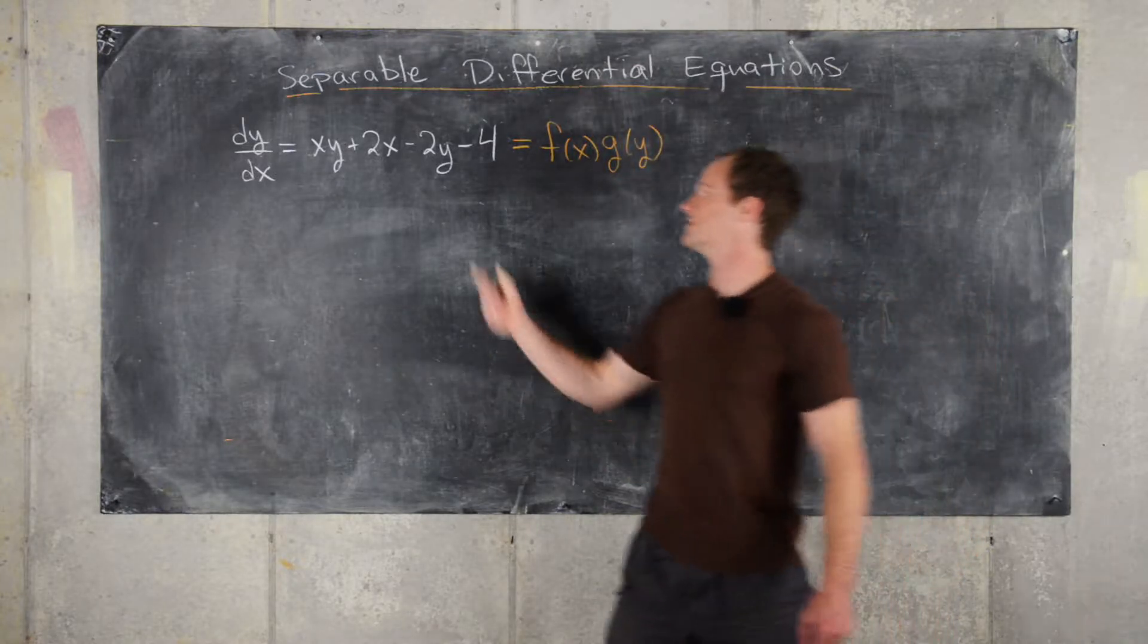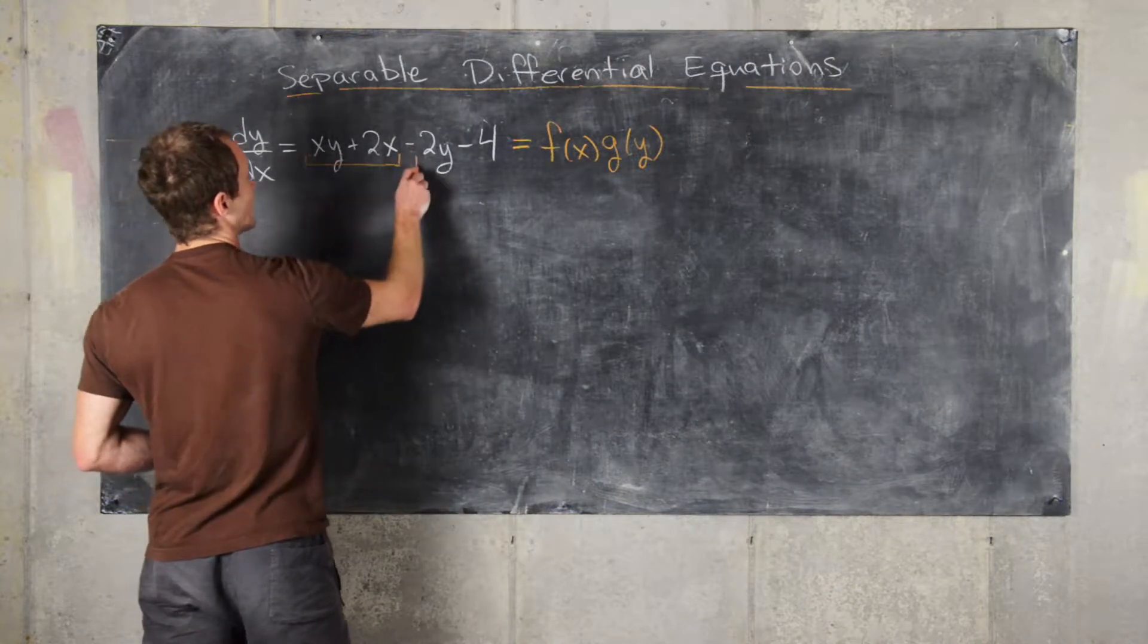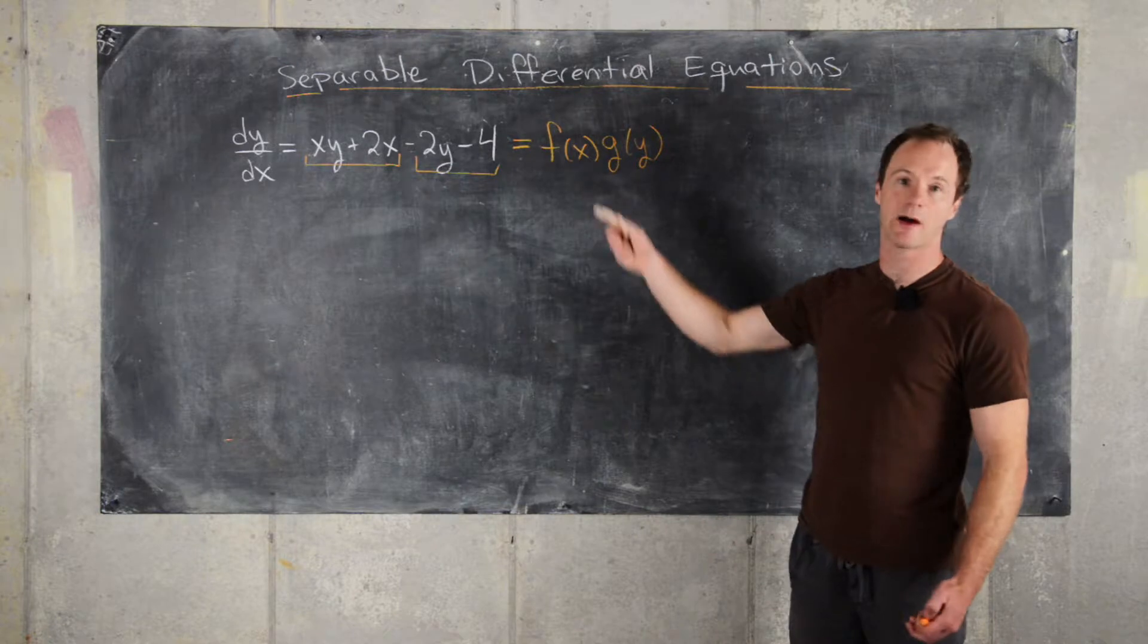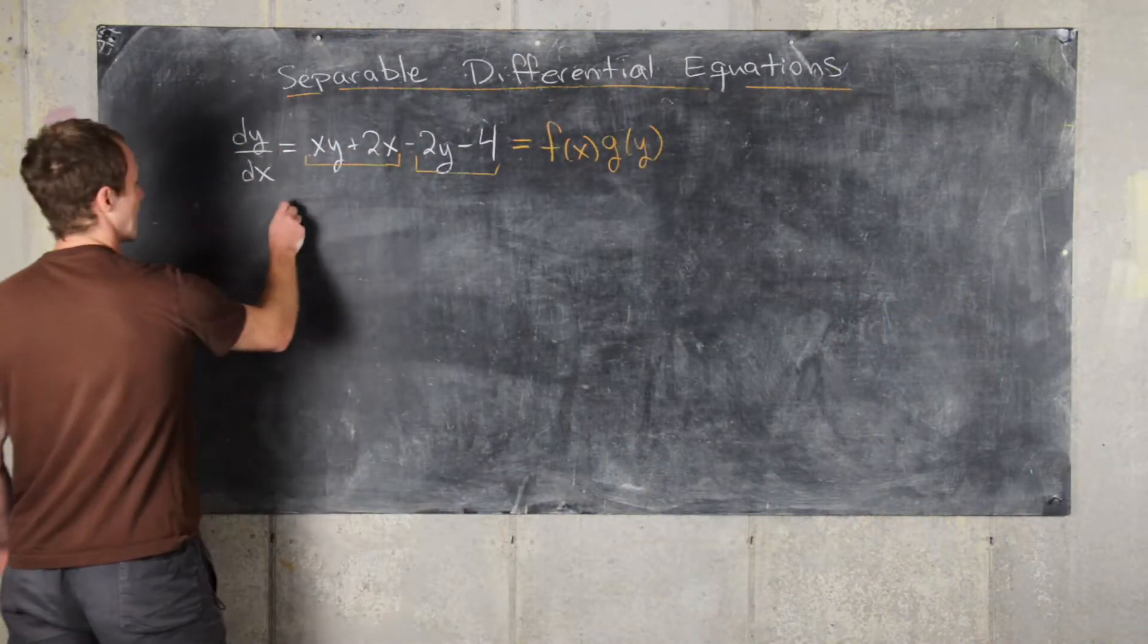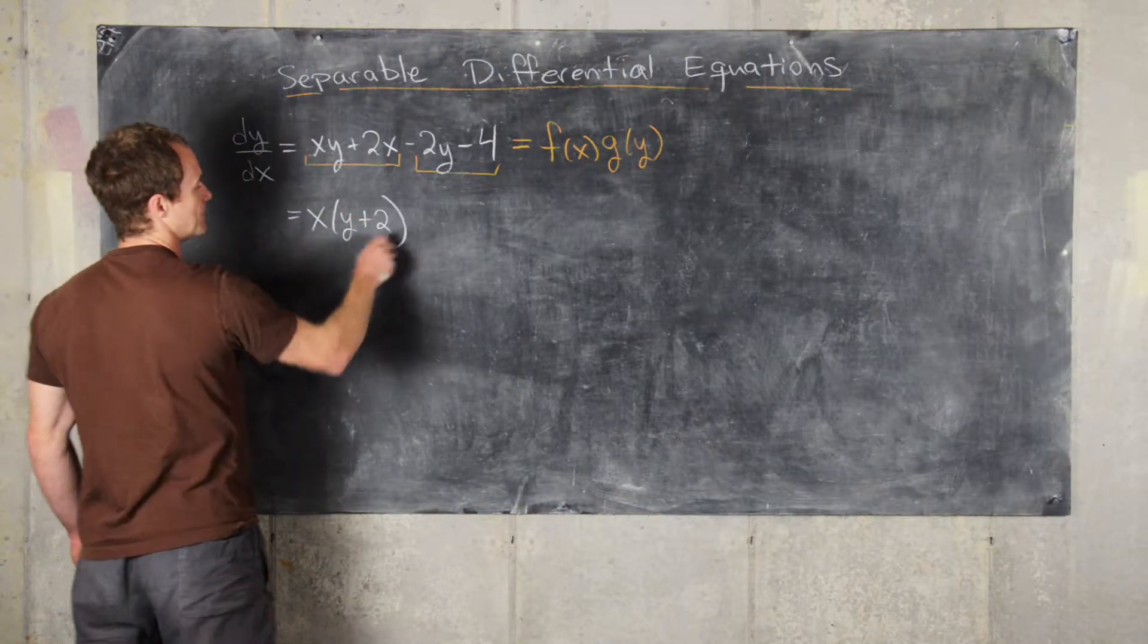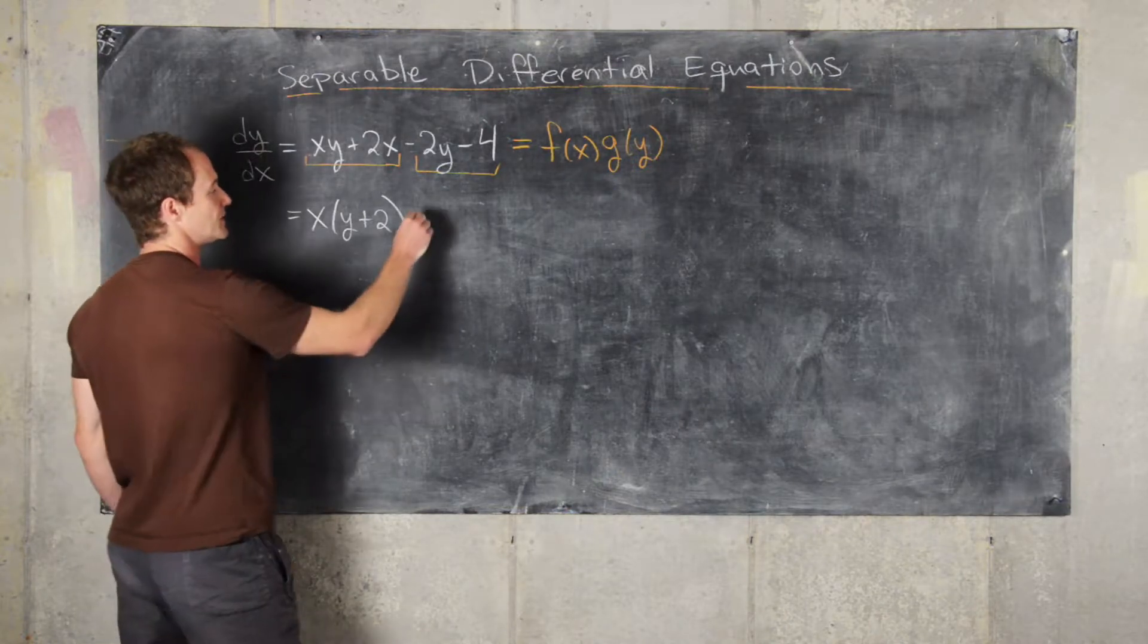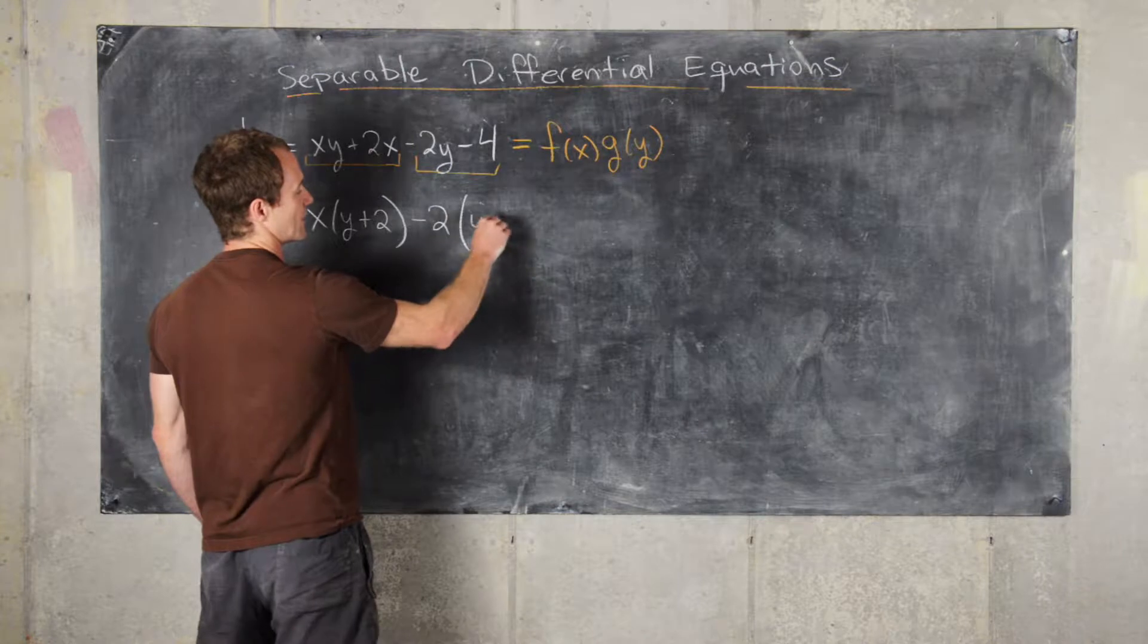Let's notice that as it's written right here, the first two terms and the last two terms both share a common factor. The common factor on the first two terms is x, so we can factor that out. Now we have x times (y plus 2). The common factor on the last two terms is negative 2, so we can factor negative 2 out, and notice that leaves us with y plus 2.